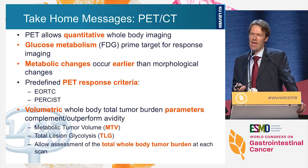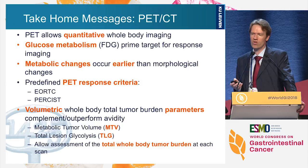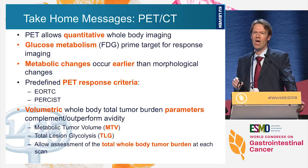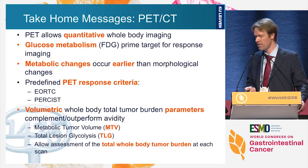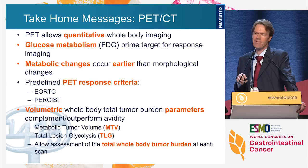My take-home messages: PET allows quantitative whole-body imaging of a variety of tracers, but for response imaging FDG targeting glucose metabolism remains our prime agent in radiation, chemo, and targeted therapies. Metabolic changes occur earlier than morphological changes. We have predefined PET response criteria — EORTC and PERCIST. Last but not least, volumetric whole-body total tumor burden parameters — MTV and TLG — are complementary to or can outperform avidity parameters, allowing total tumor burden determination at each scan. Thank you very much for your attention.